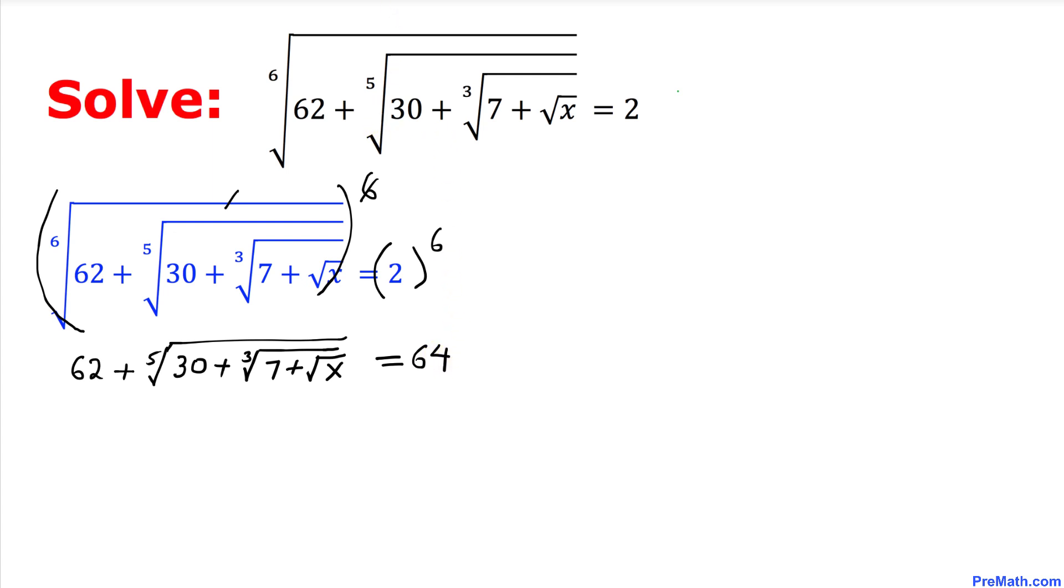Now let's subtract 62 from both sides so we can remove the 62 from the left hand side. So we simply got this radical part as we cancelled out this 62 and negative 62.